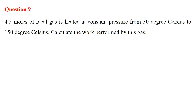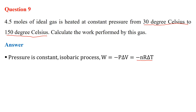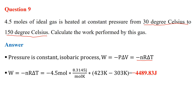Question 9: 4.5 moles of hydrogen gas is heated at constant pressure from 30°C to 150°C. We don't have the change in volume but we have the change in temperature, so we use W = −nRΔT. Converting temperatures to Kelvin and substituting values gives a work done of −4,489.83 joules.